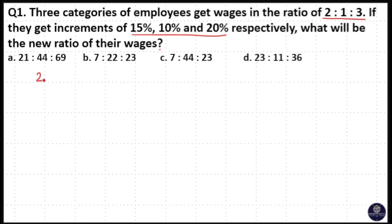There are three categories of employees and they get their wages, that is salaries, in the ratio 2 is to 1 is to 3. So the first person gets 15 percentage increment, second person gets 10 percentage increment, and third person gets 20 percentage increment. After the increment, what is their new salary ratio, that is new wage ratio?